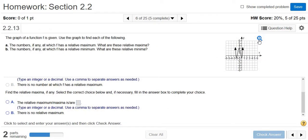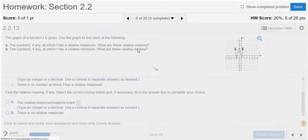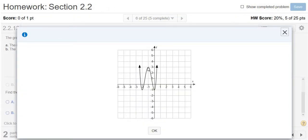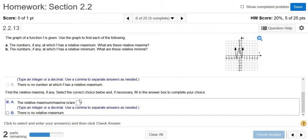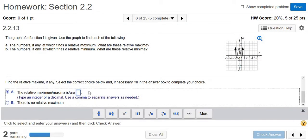And then it says, find the relative maxima. So that's just the y value, that's just 3. So 3 is the relative maximum. So I'm going to go back here and click this box and press 3.